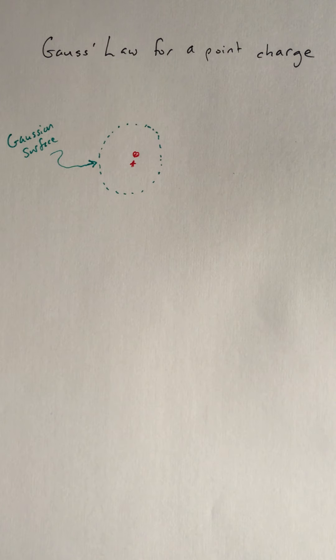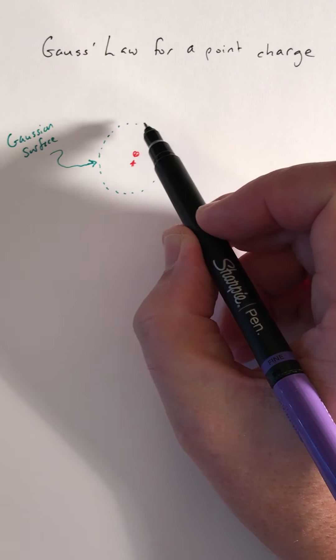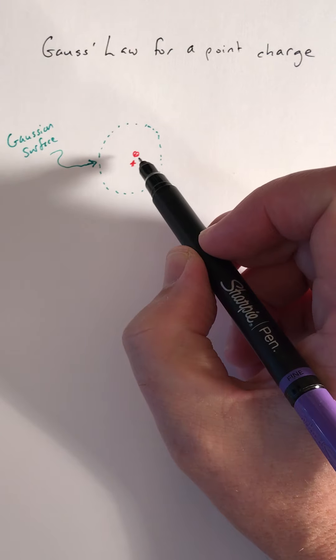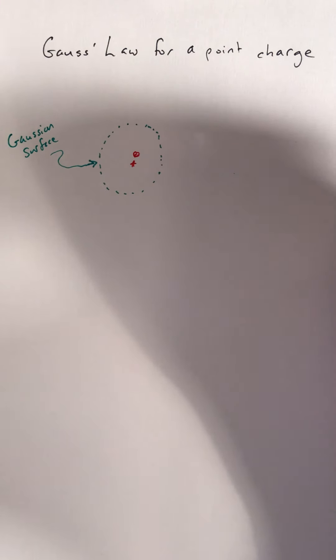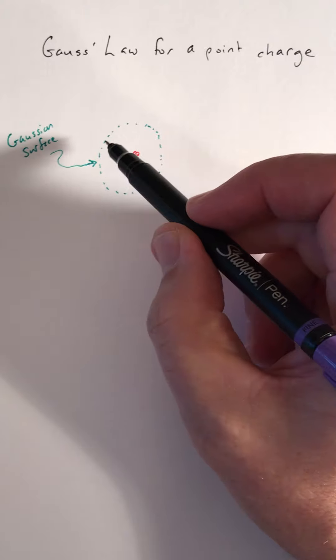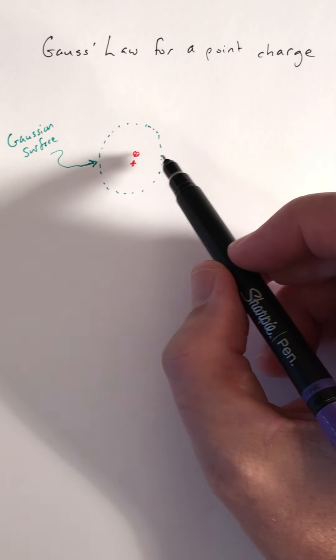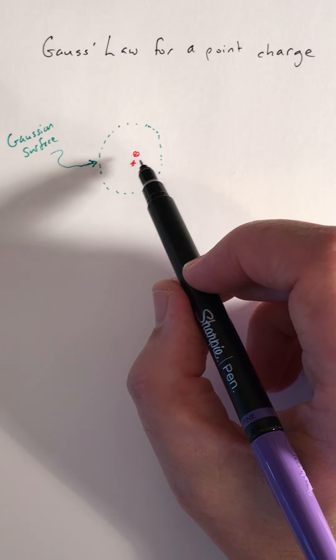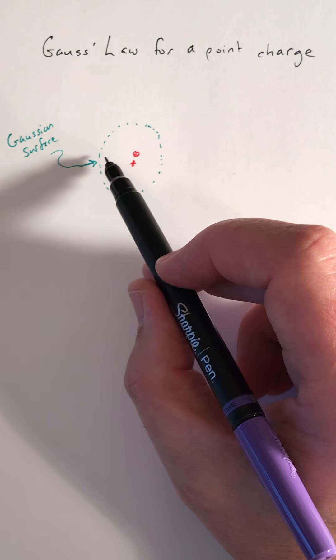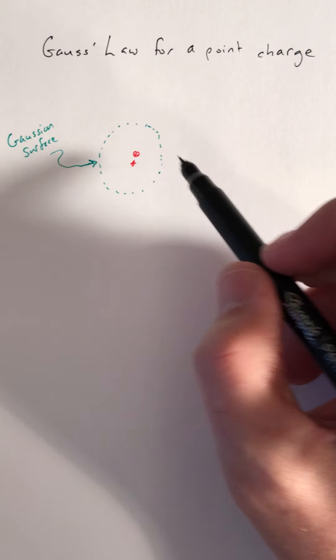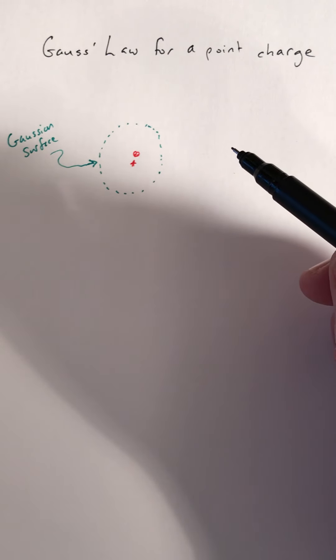When we think about what the electric field lines from this point charge are going to look like, well every point on the sphere is going to be an equal distance away from the point charge. So the electric field has to have a constant value all along that surface, because otherwise you'd be saying it'd be stronger here on one side than on the other, and that's not possible. It's the same distance away from the point charge all along the surface.